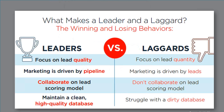This infographic from a vendor called InsideView highlights the attributes of leaders and laggards as it relates to marketing and sales alignment and lead management. Organizations that focus on lead quality over quantity experience greater successes. These organizations maintain quality over quantity by having a strategic scoring model in place, maintaining a clean database, and focusing on supporting the sales process beyond just lead acquisition.